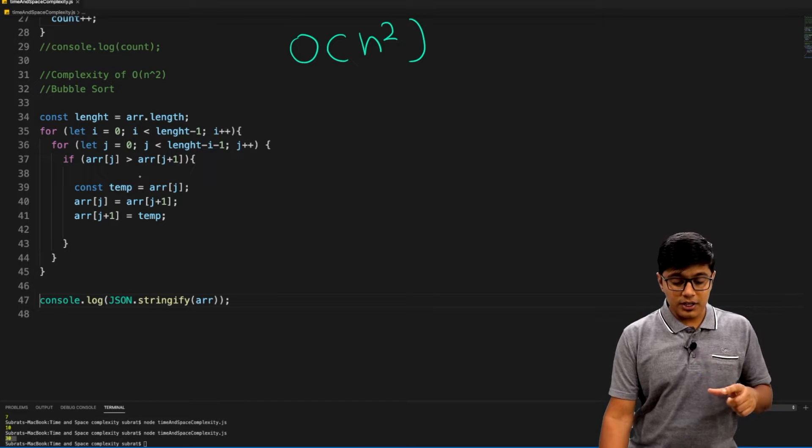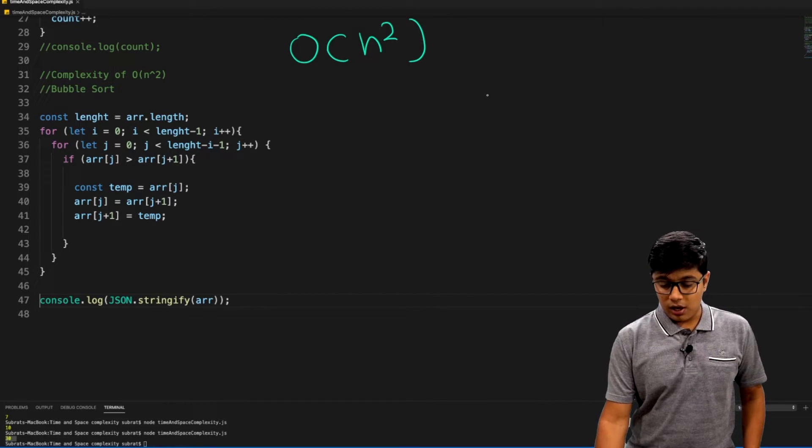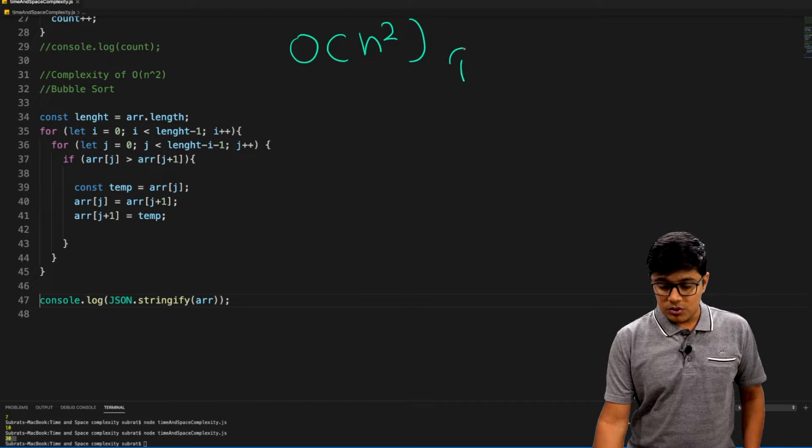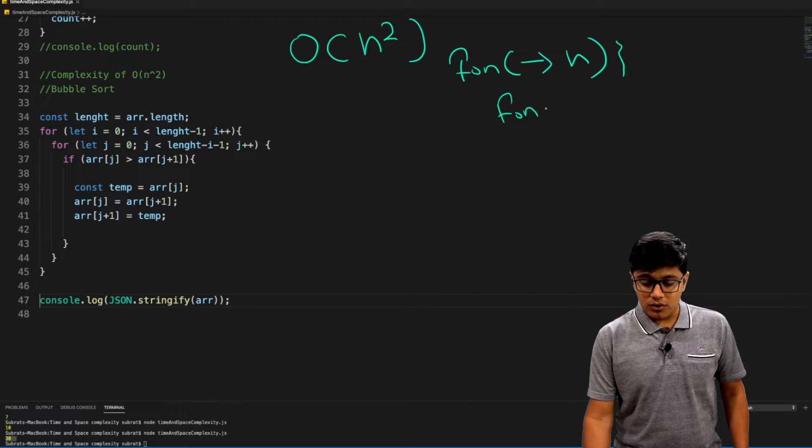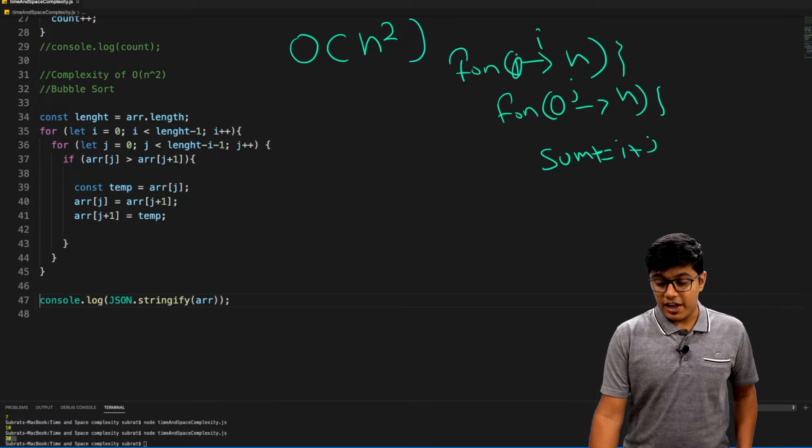Bubble sort is a little complicated for a beginner, so I'll write one. Suppose you are writing a for loop running till n, and inside that you have another for loop which is again running from 0 to n. For every i, it's coming inside and running for j amount of time.